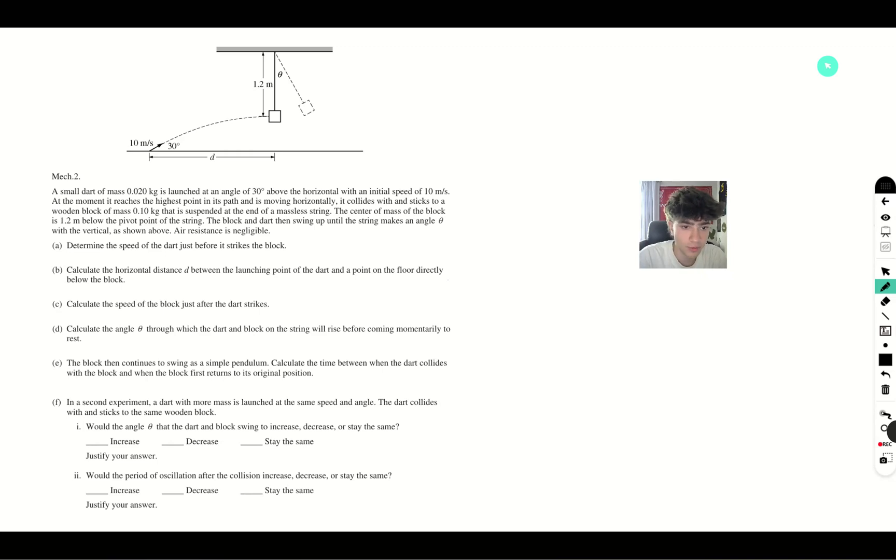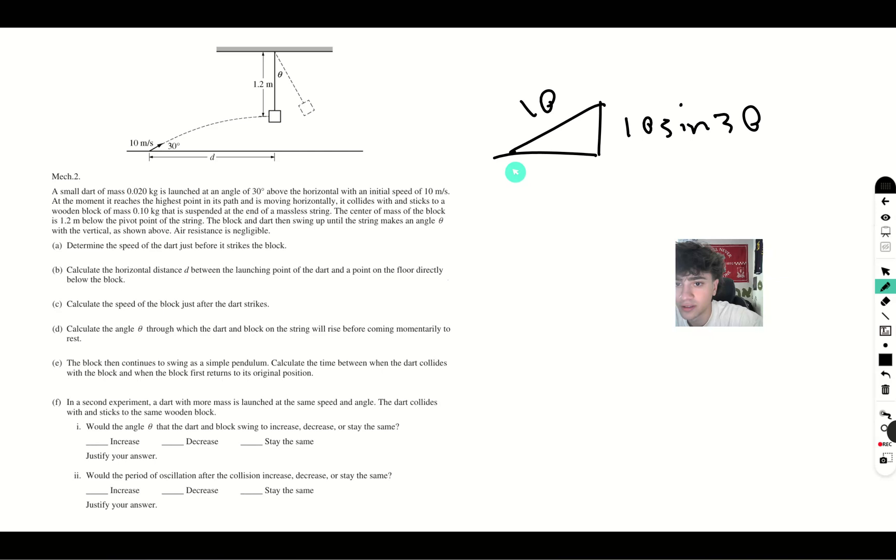First it wants us to determine the speed of the dart just before it hits the block. The horizontal and vertical components of the velocity add up to 10 meters per second. The vertical is 10 sin 30, the horizontal is 10 cos 30. As the trajectory changes, the vertical component gets smaller and smaller, but the horizontal stays constant because there's no air resistance. At the end, the speed is just going to be 10 cos 30 because it's moving horizontally.